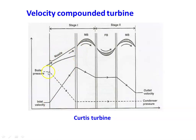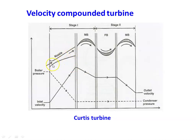The disadvantages of the velocity compounded turbine: since there is only one set of nozzles, the complete pressure drop takes place in a single nozzle, so that nozzle must be bigger and stronger to handle the complete pressure drop. Additionally, the outlet velocity from the turbine is also significantly higher, resulting in a loss of velocity energy at the turbine outlet.